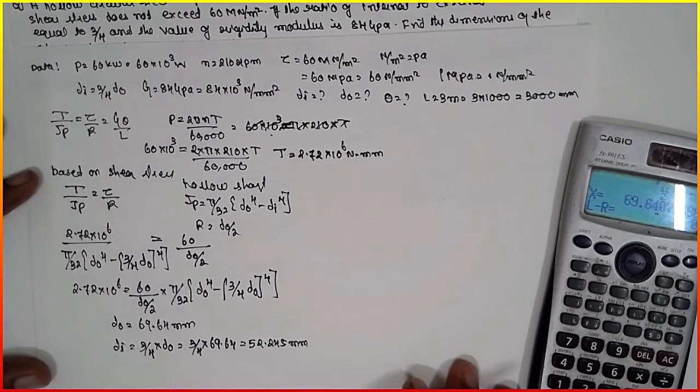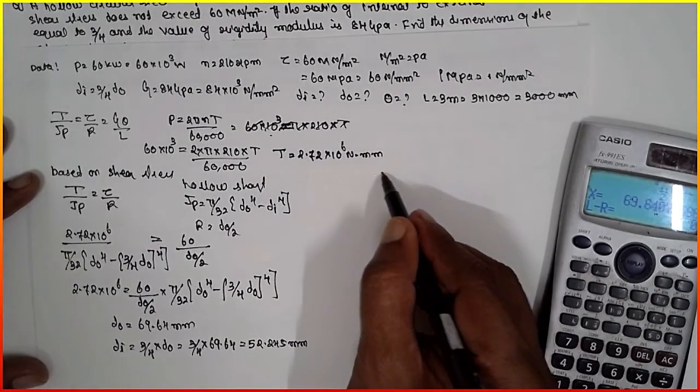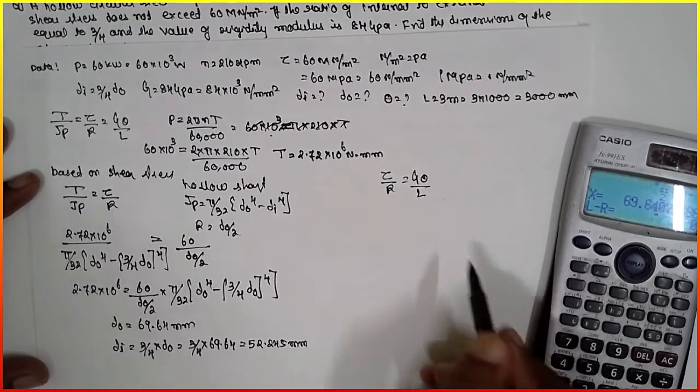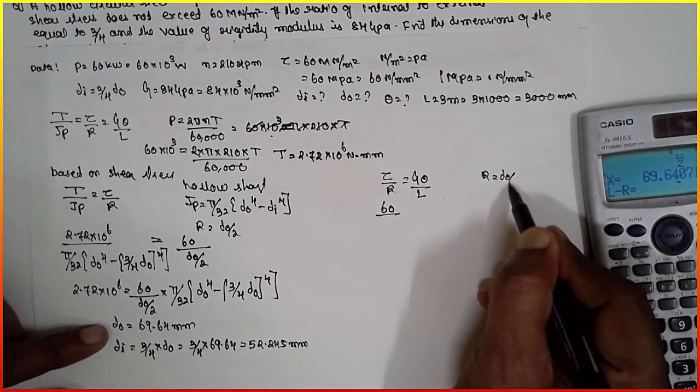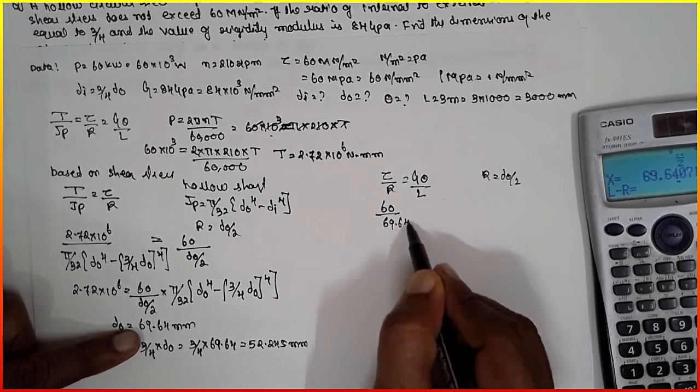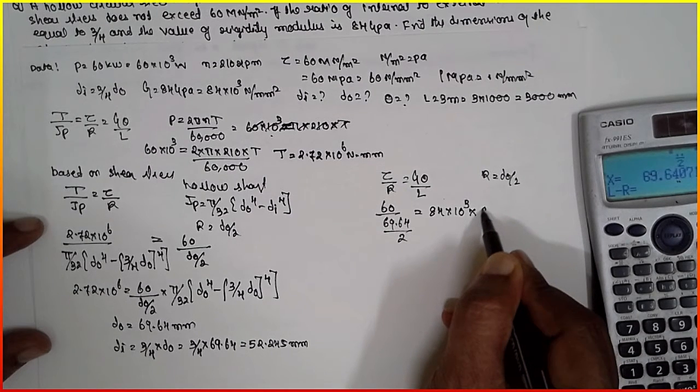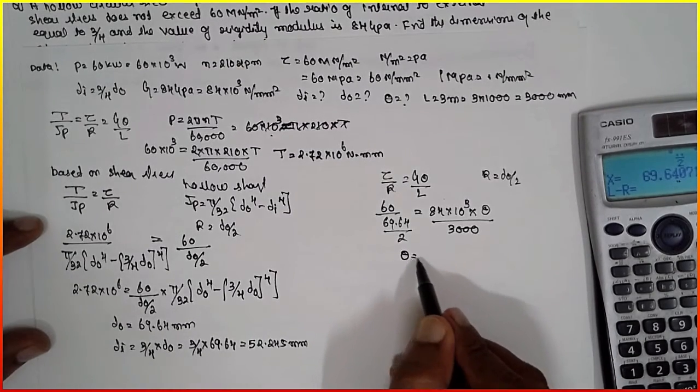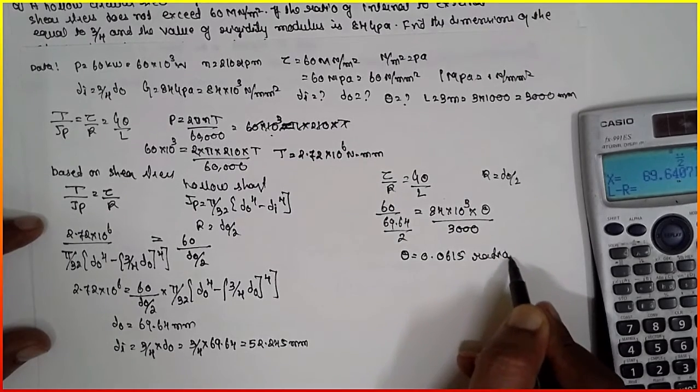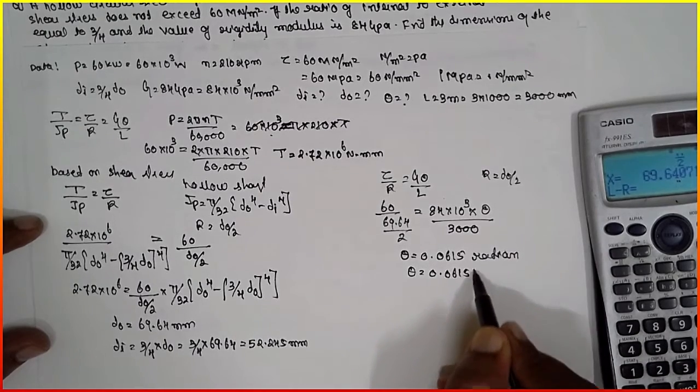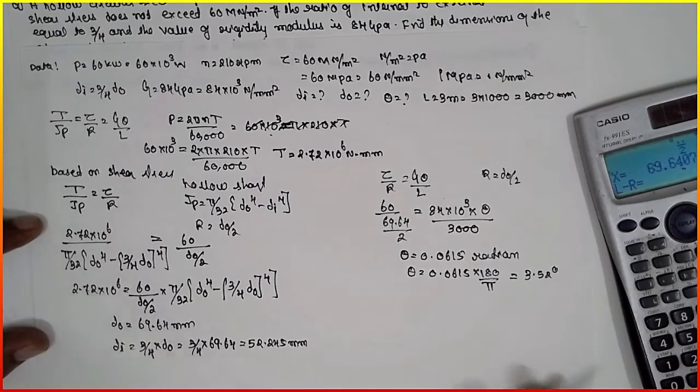We got the dimension based upon the shear stress. Now I have to find out the theta angle of twist. I will use the combination: tau divided by R is equal to G theta by L. Tau is 60, R is D naught by 2, which is 69.64 divided by 2, equals G theta divided by length 3000. Cross multiply, theta will be 0.0615 radians. Converting to degrees: theta equals 0.06515 times 180 divided by pi, giving 3.52 degrees. In this way you solve the problem. I am Satyush Gaidankar.